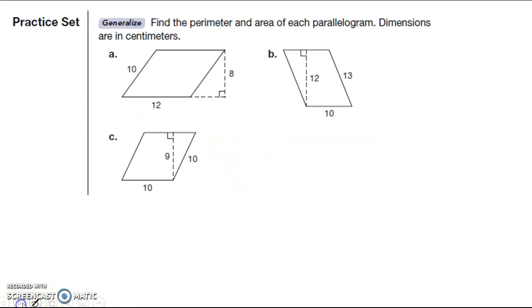So lesson 61 is about the area of parallelograms, and the formula for area of a parallelogram is simply base times height, keeping in mind that the base and the height have to make a 90 degree angle between each other.